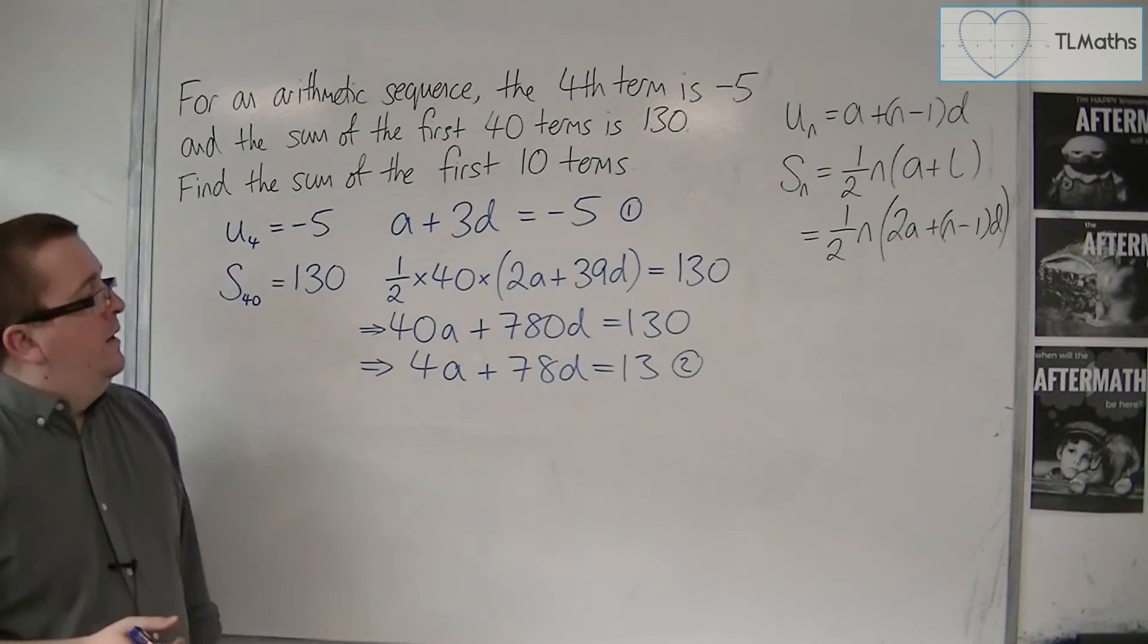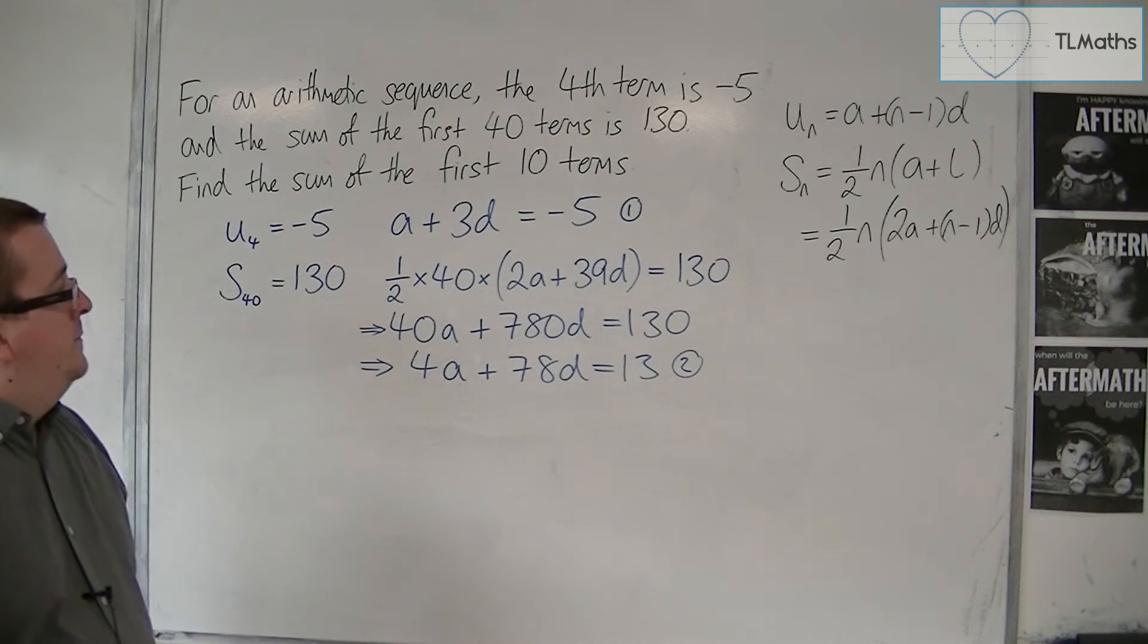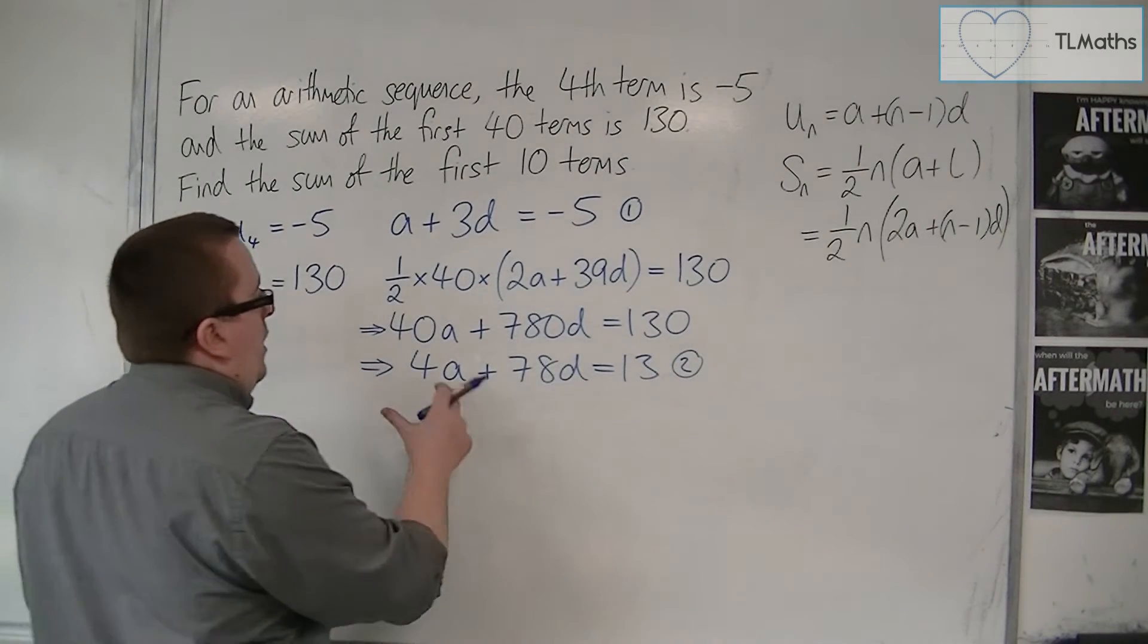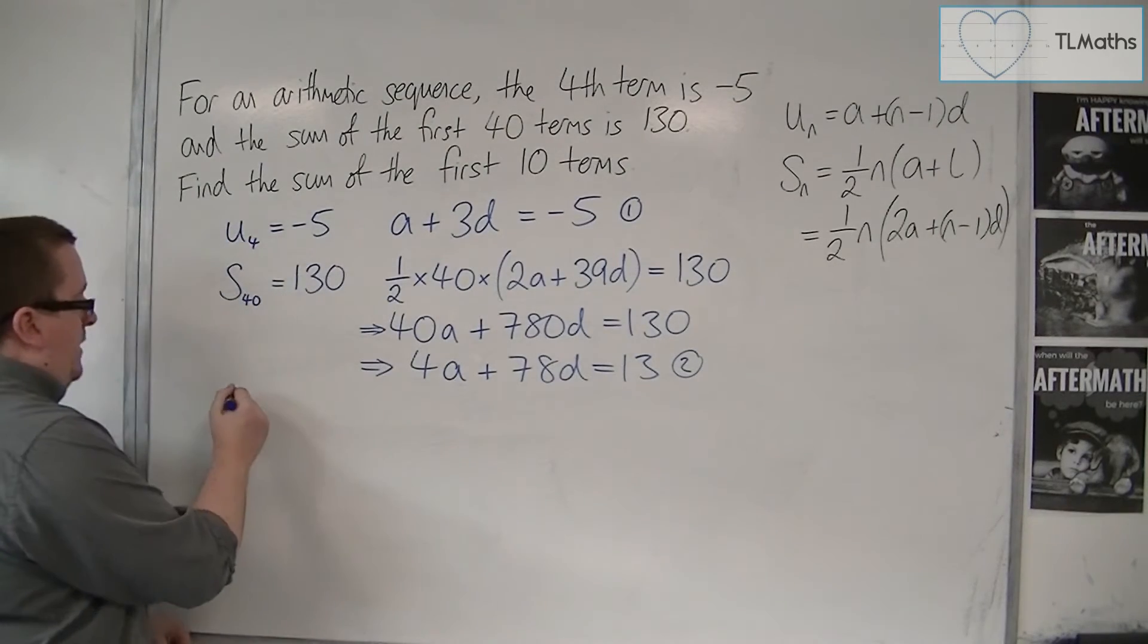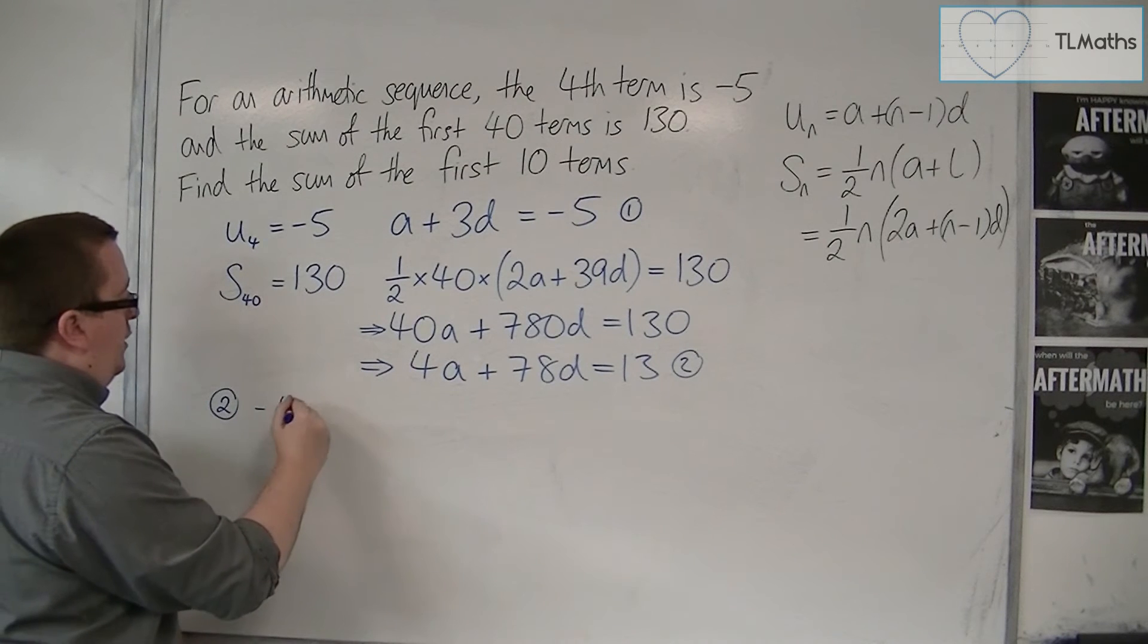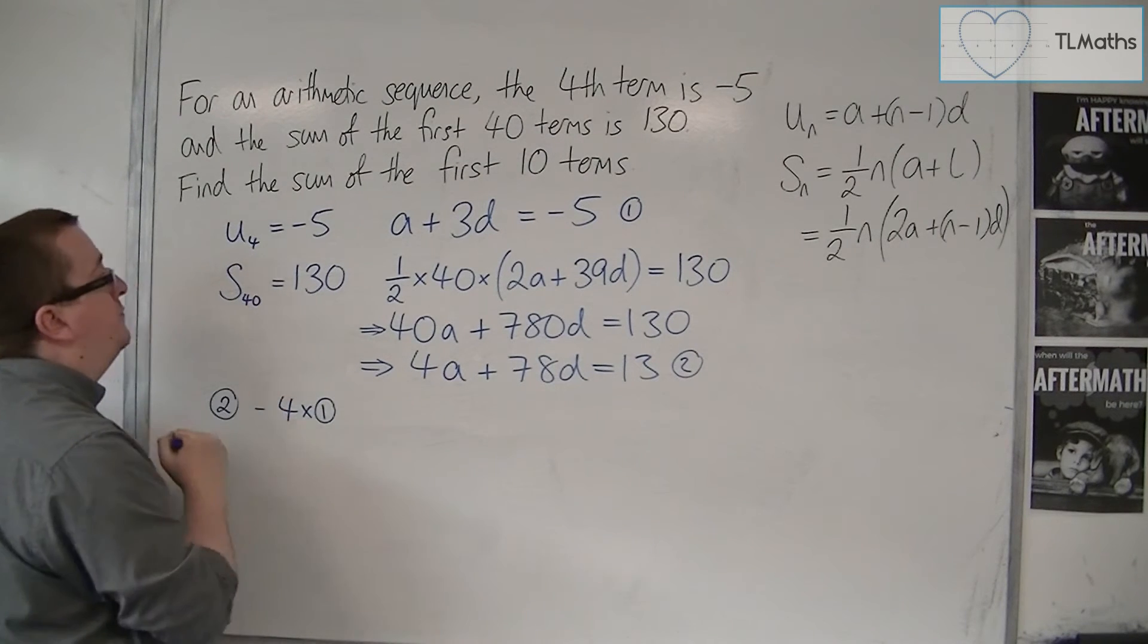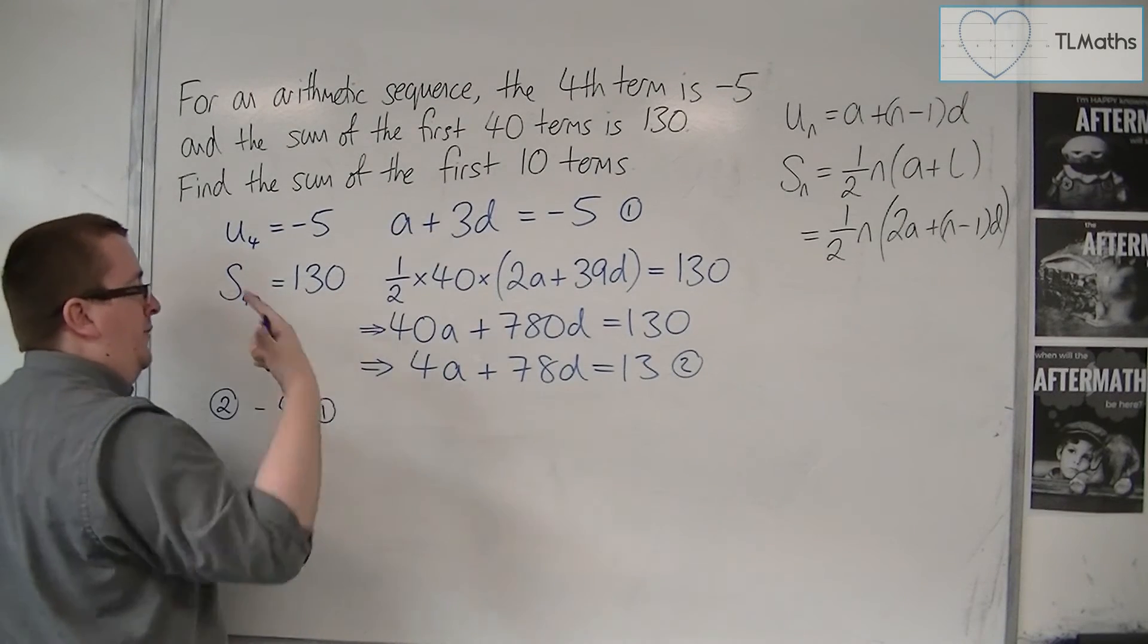Now, I'm going to eliminate the a's, that looks like the easiest option. So if I take equation 2 and subtract 4 lots of equation 1, then I get 4a take away 4a, so 0.